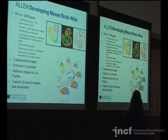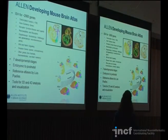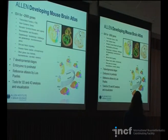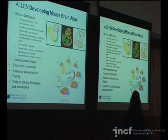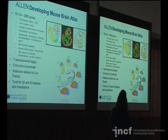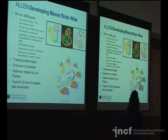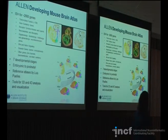The Developing Mouse Brain Atlas looks at about 2,000 genes that are pre-hand picked as hopefully being involved in development. We've got about 700 transcription factors, axon guidance genes, some disease genes, and we look at seven developmental stages of mice.